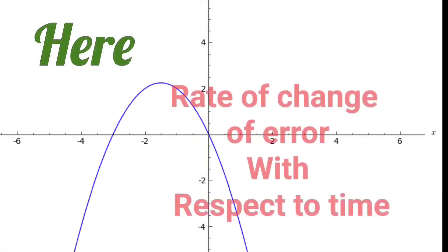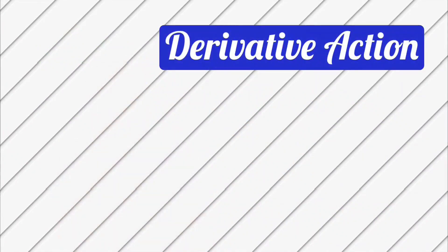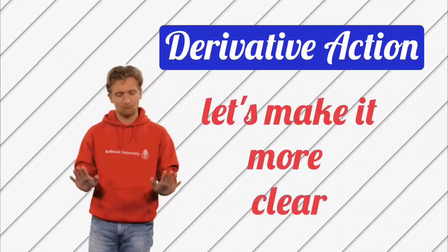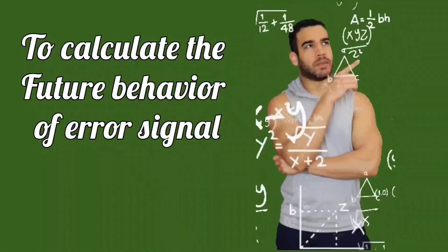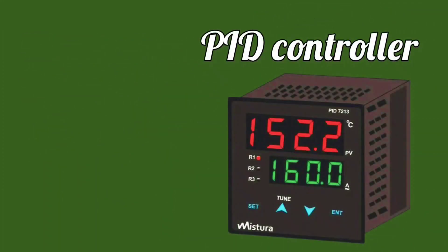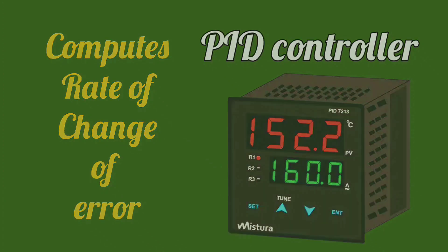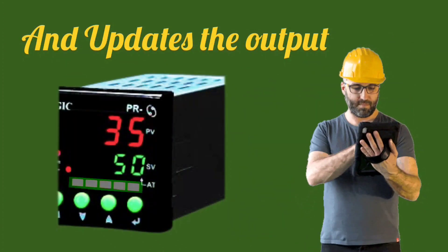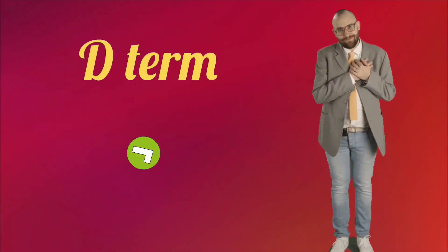Here, it is the rate of change of error with respect to time. That's why it is called derivative term or derivative action. Let's make it more clear. Here, to calculate the future behavior of the error signal, the PID controller computes the rate of change of error and accordingly updates the output. I hope you must have got clear d term from here.